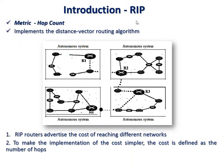In summary, Routing Information Protocol implements the distance vector algorithm with hop count as the metric, used to find the shortest path from source to destination. It is limited to a maximum of 15 hop counts. Thank you.